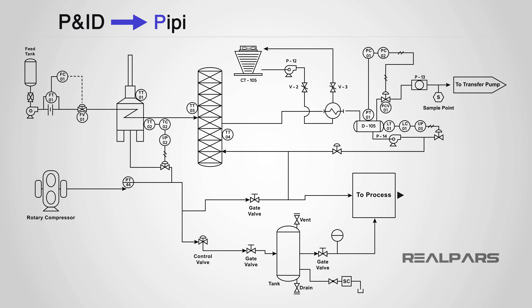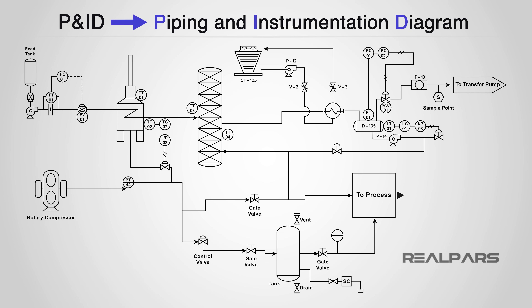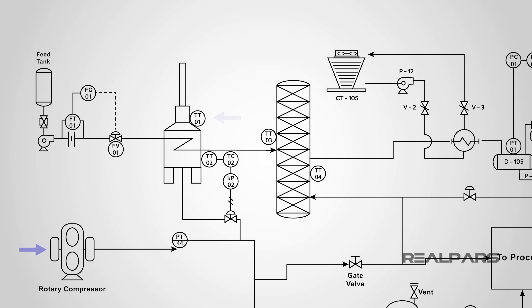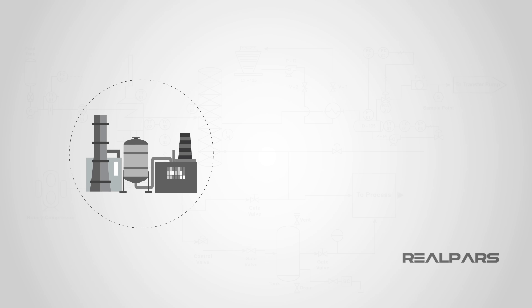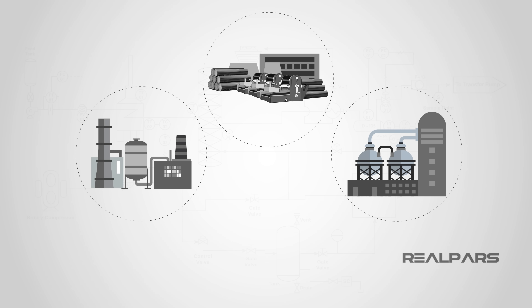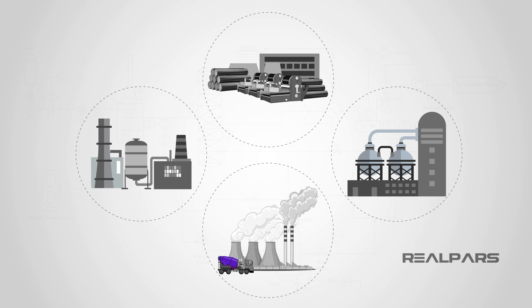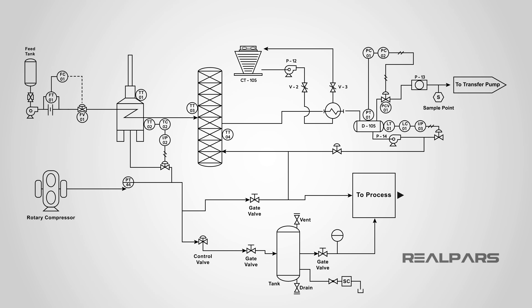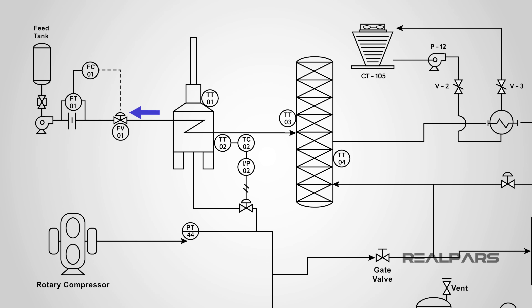P&IDs, or Piping and Instrumentation Diagrams, are schematic representations of pipelines, equipment, instrumentation, and control systems found in process environments such as oil refineries, chemical plants, paper mills, and cement plants. The symbols contained in P&IDs represent the equipment in the process, such as actuators, sensors, and controllers. Process equipment such as valves, instruments, and pipelines are identified by codes and symbols.